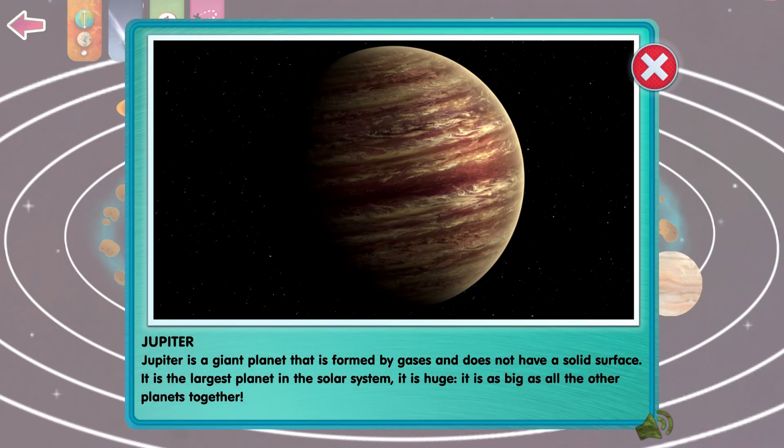Jupiter is a giant planet that's formed by gases and does not have a solid surface. It is the largest planet in the Solar System. It is huge! It's as big as all the other planets together.